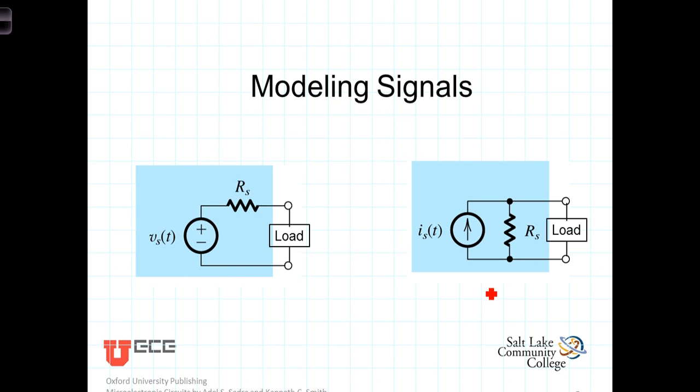Now presumably this source that we're receiving and are interested in is going to be processed by something, and whatever it's being connected to we're going to refer to as a load. When the load is connected to a source modeled as a Thevenin source, the load introduces a voltage division between the voltage source and the load. The voltage that ends up at the load will be a voltage-divided portion of the actual signal voltage coming from the transducer.